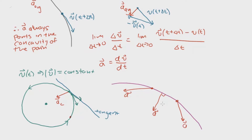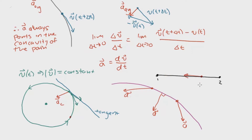What if the particle doesn't change direction — that is, the particle is moving along a straight line? If you have a particle moving from state one to state two along a straight line, the acceleration vector will lie on that line. If the particle is accelerating, the acceleration vector points in the direction of motion; if it's decelerating, it points in the opposite direction. For a linear path, the velocity vector is collinear with the path of motion.